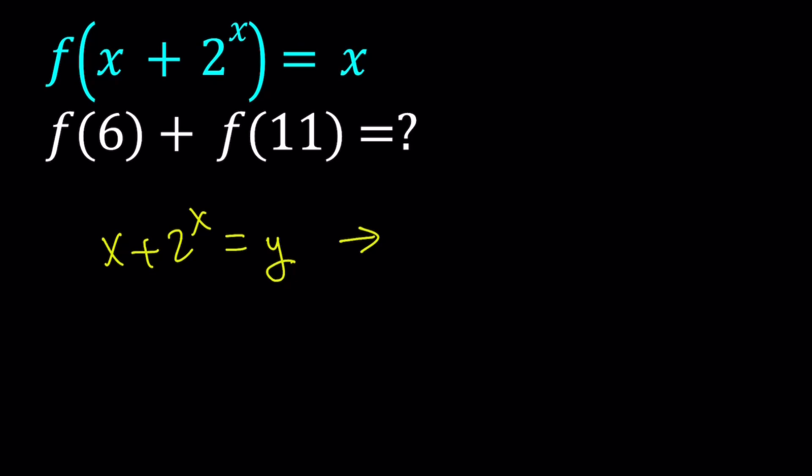So we're going to find f(6) and f(11) separately and then add them. First, to find f(6), we're going to set x + 2^x = 6. Now, at this point, you can go ahead and guess what x could be. And if you set x = 2, then you're totally right about it. But are we done?